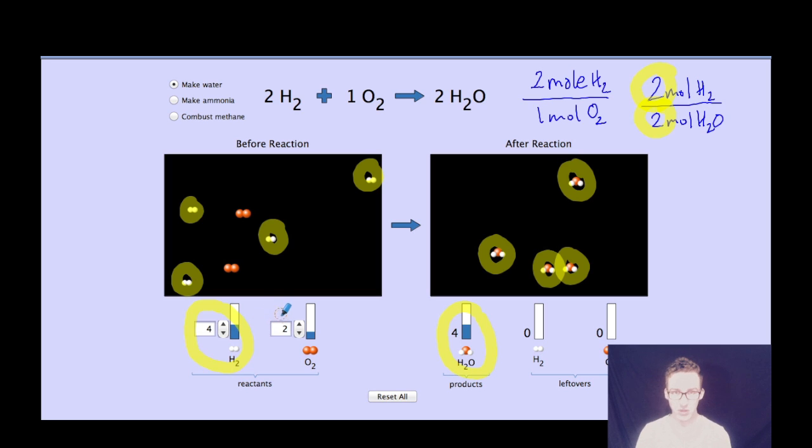Similarly, the relationship between oxygen and hydrogen is always going to exist in a one to two ratio or two to one, depending on how you're looking at it. So if I have four moles of hydrogen, I need two moles of oxygen to react all of that hydrogen.